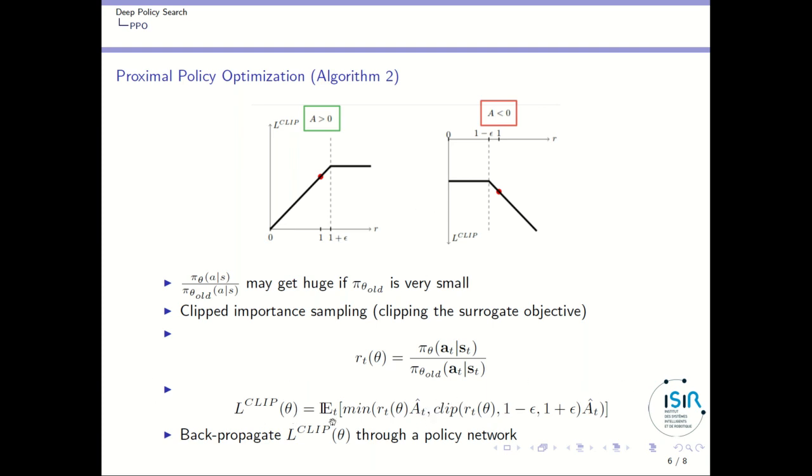And then once you have used this formula with clipping instead of just using R of theta, then you can backpropagate the loss corresponding to that through your policy network and you will get something that is similar to TRPO, but which is much simpler to write in terms of piece of code. So PPO is a quite, this version of PPO is a very simple version of a policy gradient algorithm and it performs better than TRPO in most cases. So that's a good idea to use this.